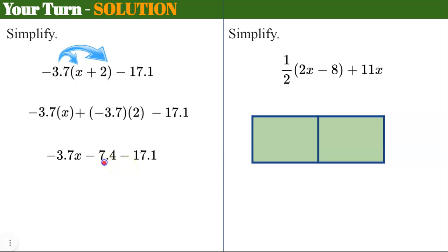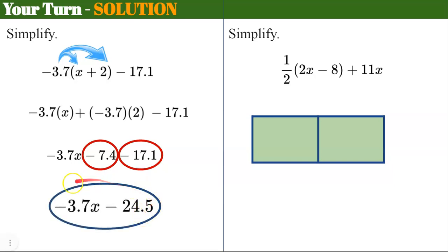We're not done because negative 7.4 and negative 17.1 are like terms. They're both constants. So we need to combine them. Negative 7.4 and negative 17.1 are negative 24.5. So our simplified expression is negative 3.7x subtract 24.5.